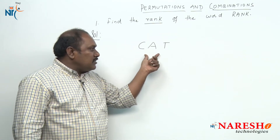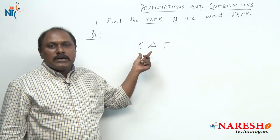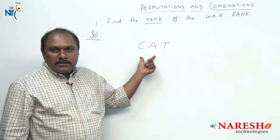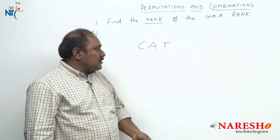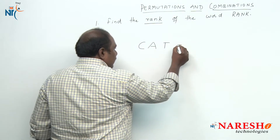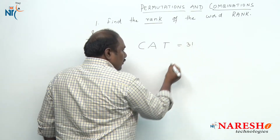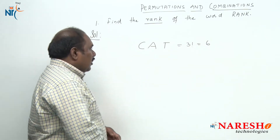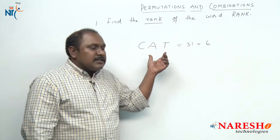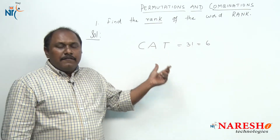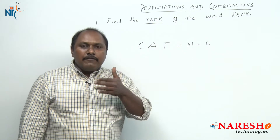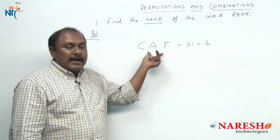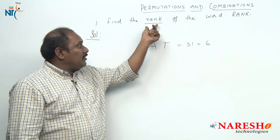In how many ways can we arrange the letters of the word CAT? We know that CAT has three different letters. Three different letters taken all at a time can be arranged in three factorial ways, which is six ways. Now all the six arrangements, if we arrange according to alphabetical order, what is the position of the word CAT? That is rank.